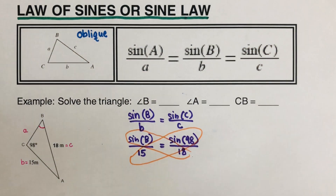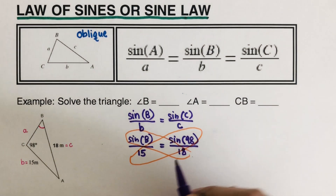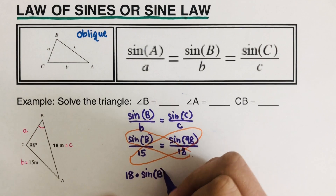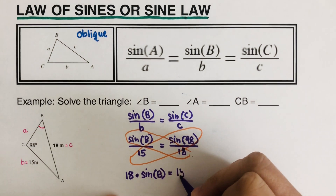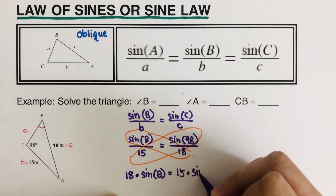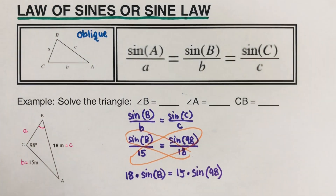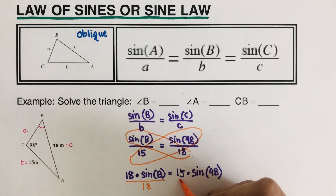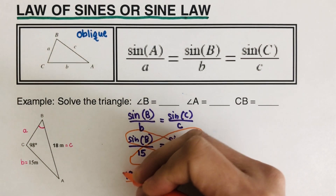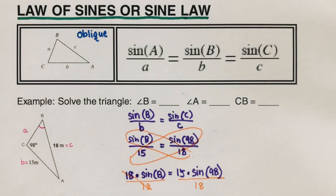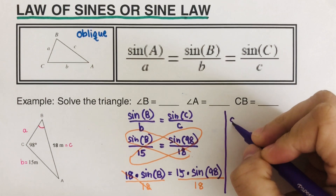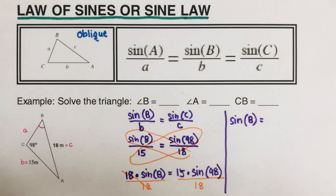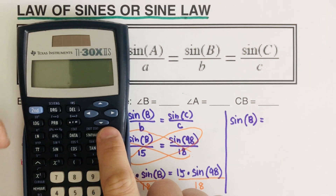After dividing, we need to calculate the right-hand side: 15 times sine 98, divided by 18.